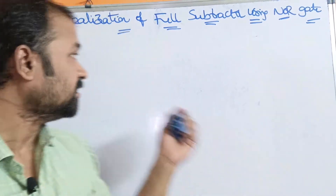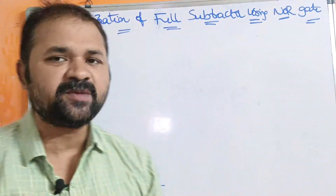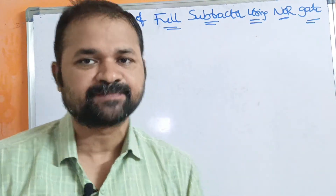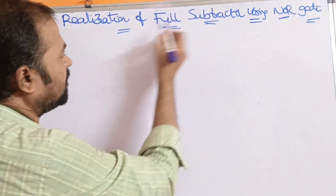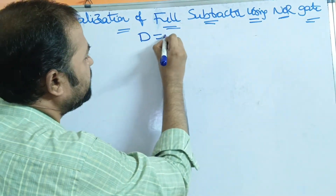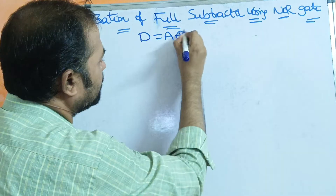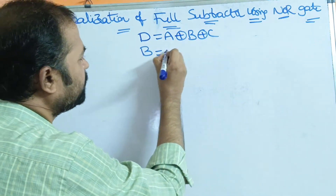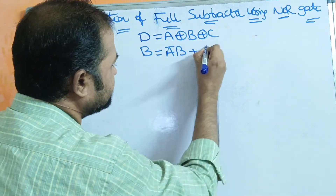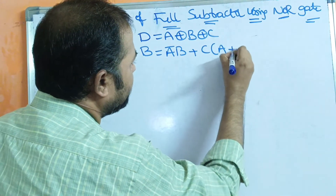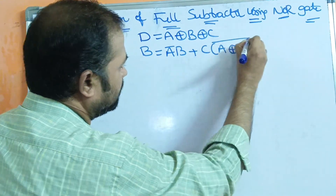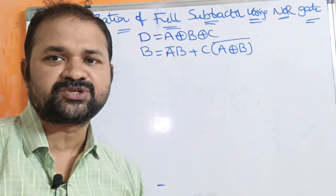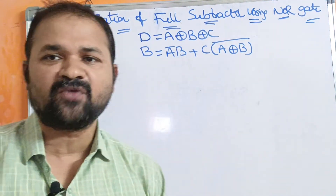Let us discuss about realization or implementation of full subtractor using only NOR gates. We know the expressions for the full subtractor: Difference is equal to A XOR B XOR C, whereas Borrow (B_out) is equal to A_bar·B + C·(A XOR B)_bar. Now we have to implement the full subtractor for these two expressions with the help of only NOR gates.